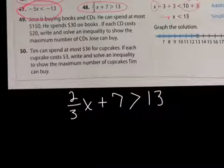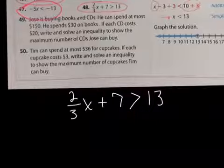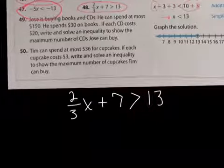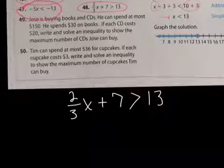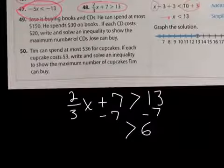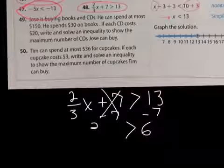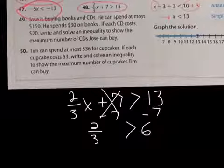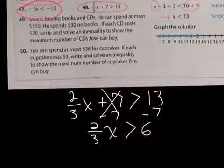And here we have a two-step inequality for number 48. Two thirds of x plus 7 is greater than 13. Let's go ahead and first get rid of the 7. So minus 7 on this side and minus 7 on this side. And it's going to leave me with 6. This is gone. And now I have 2 thirds of x is greater than 6.